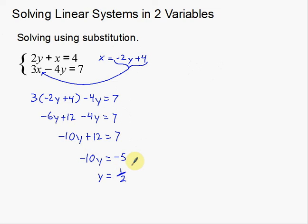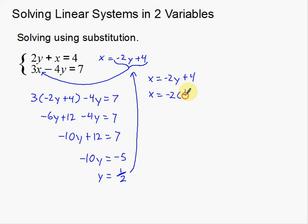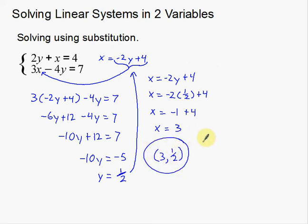Just like last time, I'm going to plug y equals 1/2 back into what I used for substitution to find x. So x equals negative 2y plus 4, meaning x equals negative 2 times 1/2 plus 4. Negative 2 times 1/2 is negative 1, plus 4, therefore x equals 3. My solution, written as a coordinate, is (3, 1/2). My x-coordinate is 3 and my y-coordinate is 1/2.